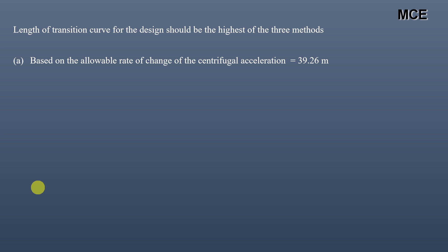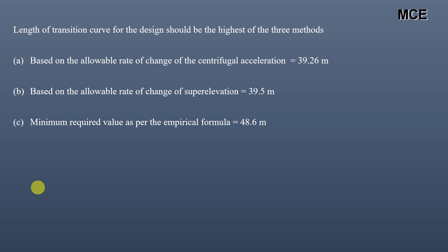According to the IRC, the design length of the transition curve should be the highest of the three values: L₁ = 39.26 m (centrifugal acceleration), L₂ = 39.5 m (super elevation), and L₃ = 48.6 m (empirical formula). The third case governs, so the design length of the transition curve is 48.6 m, or approximately 49 meters.